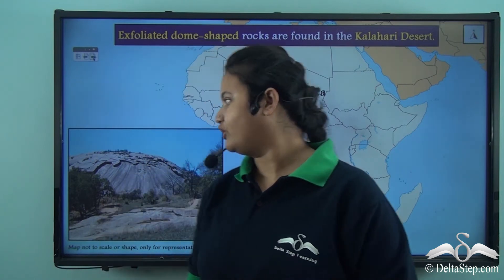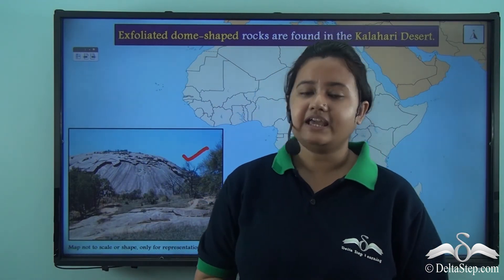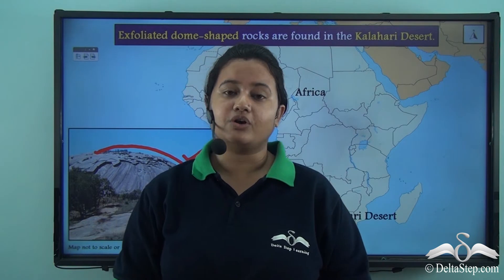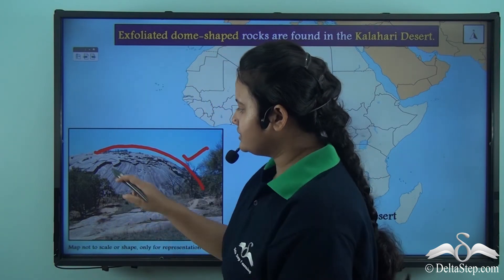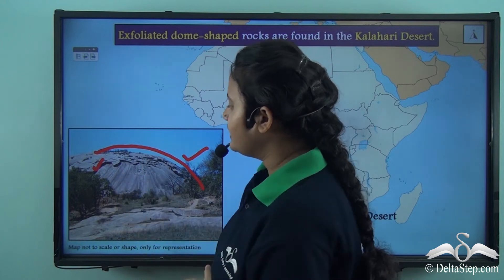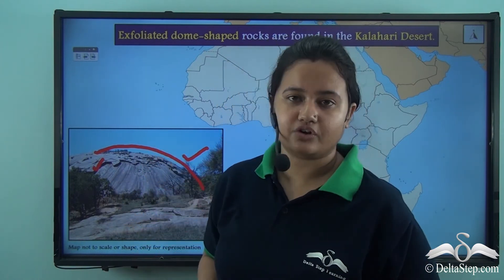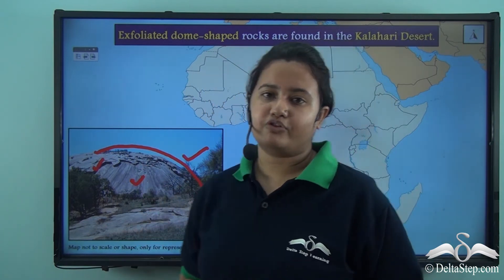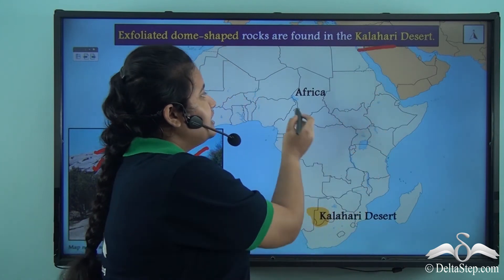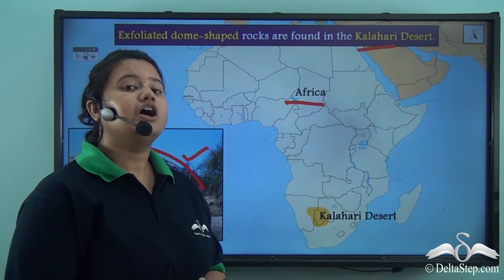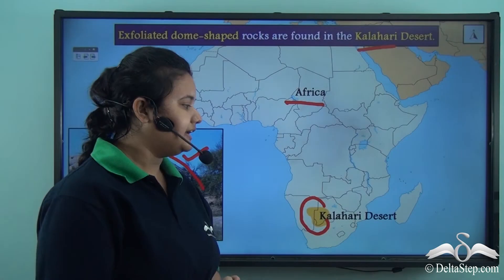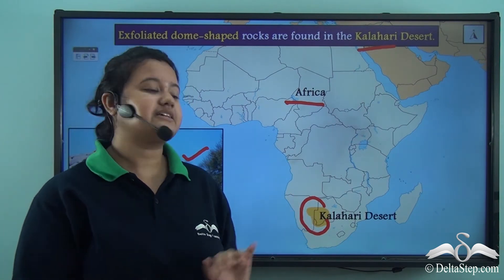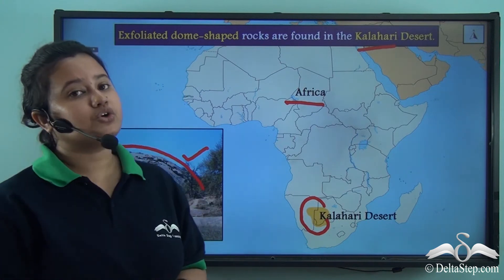Here we have a picture of an exfoliated rock. This exfoliated rock is dome shaped, because the outer surface of the rock peels off and the inner surface gets exposed. This type of rock is found in the Kalahari Desert of South Africa. The map shows that the Kalahari Desert is located in the southern part of Africa, and in this region we can find exfoliated dome-shaped rocks.